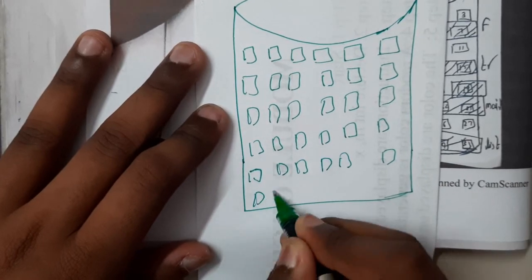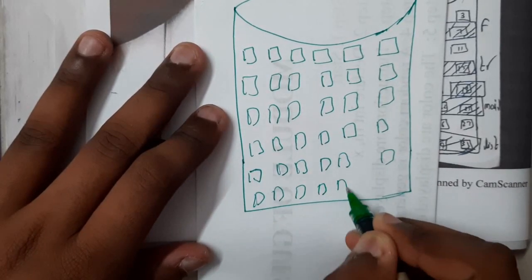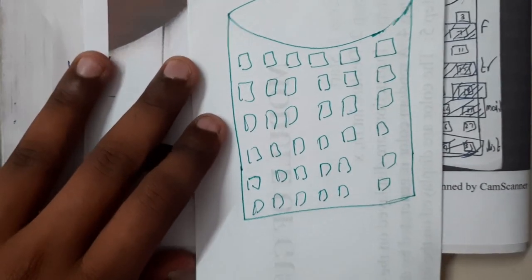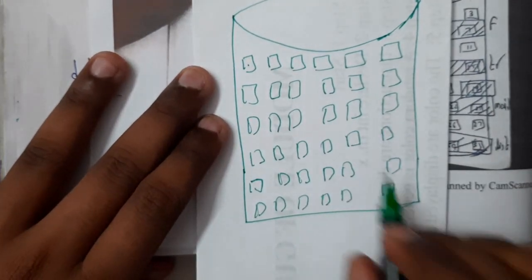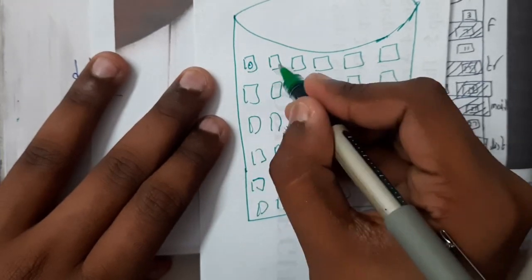30, 31, 32, 33, 34, 35. So we got total 36 blocks. I'll be starting from 0.